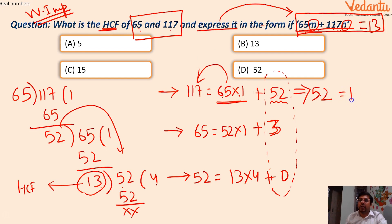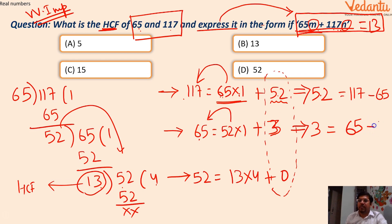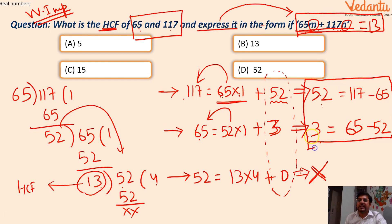From the equation 117 = 65 × 1 + 52, isolating the remainder: 52 = 117 − 65 × 1, which gives 52 = 117 − 65. Important rule: never find the remainder from the last step — always start from the second-last step. The second-last step gives 13 = 65 − 52 × 1, which is the equation containing our HCF. So we have: 13 = 65 − 52.